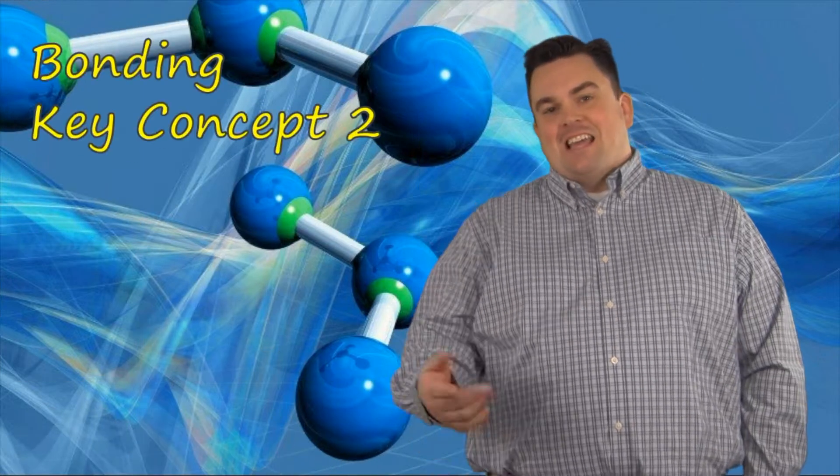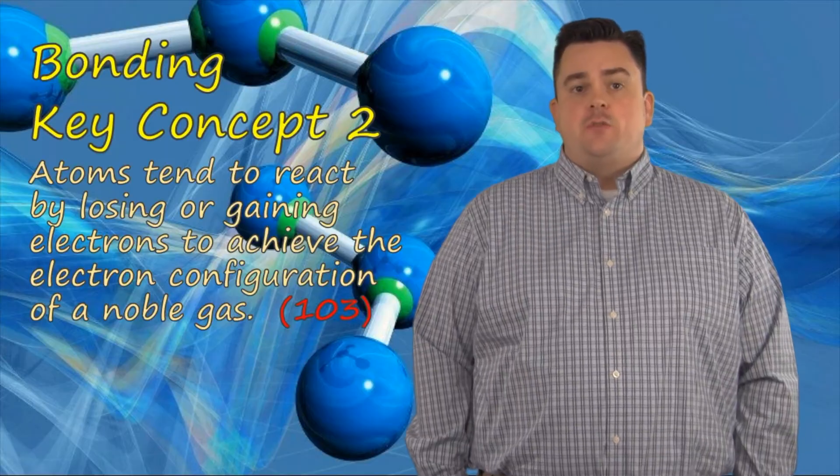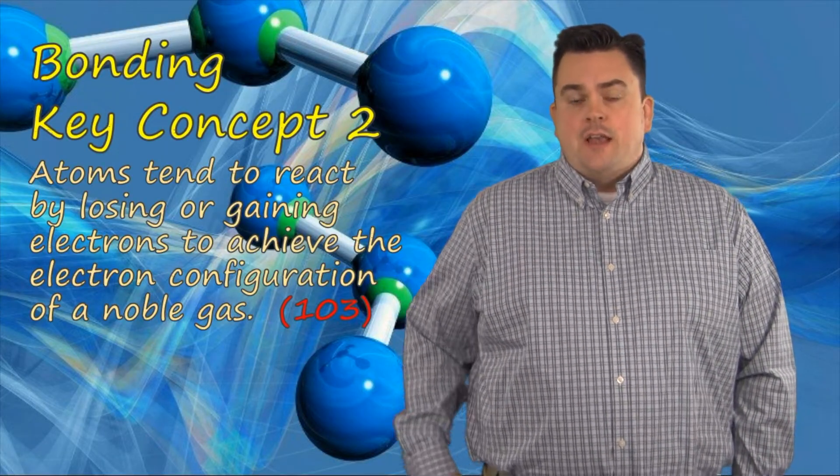Bonding key concept two. Atoms tend to react by losing or gaining electrons to achieve the electron configuration of the noble gas. We have to remember from the last set of videos for periodic table, noble gases have a full outer shell of valence electrons. They almost all have eight, except for helium, which has two. We call that set of eight electrons a stable octet. All other elements are trying to achieve this stable octet.